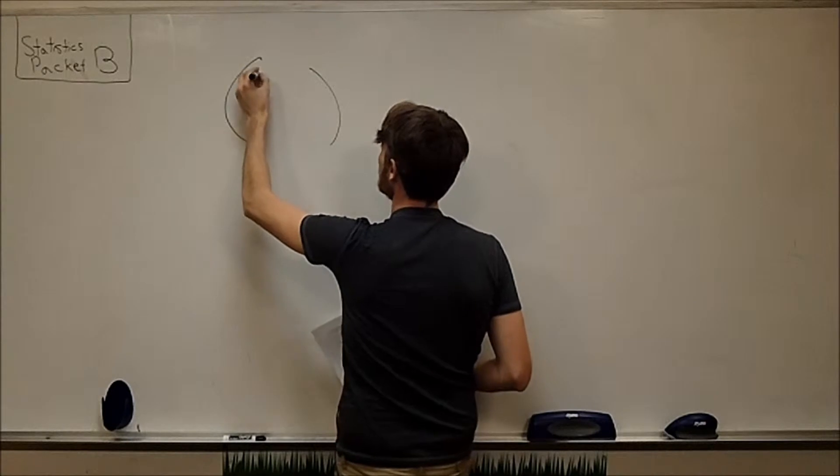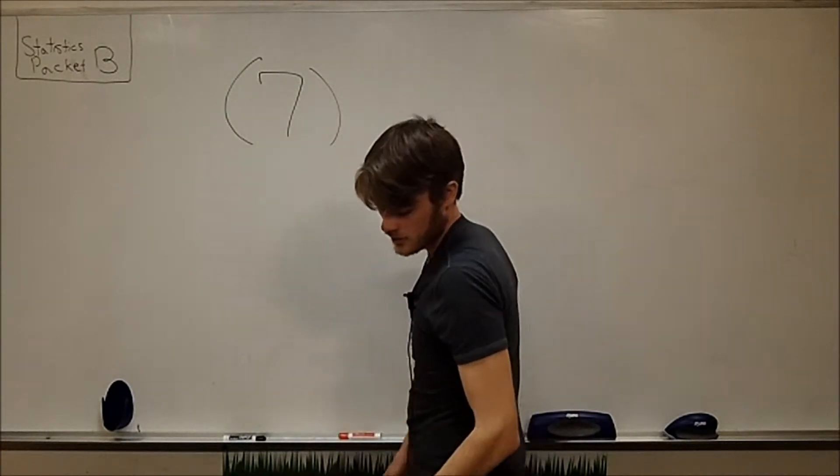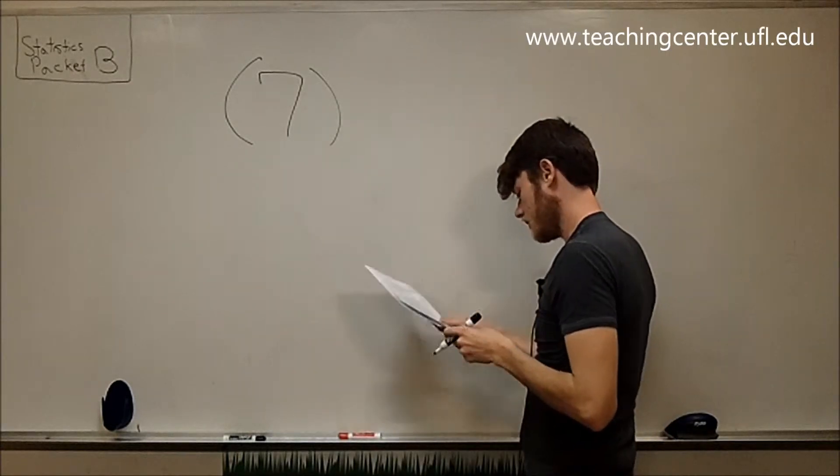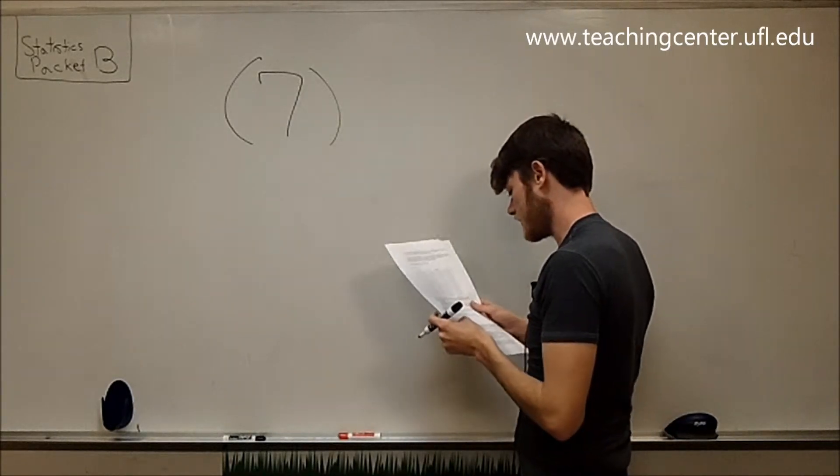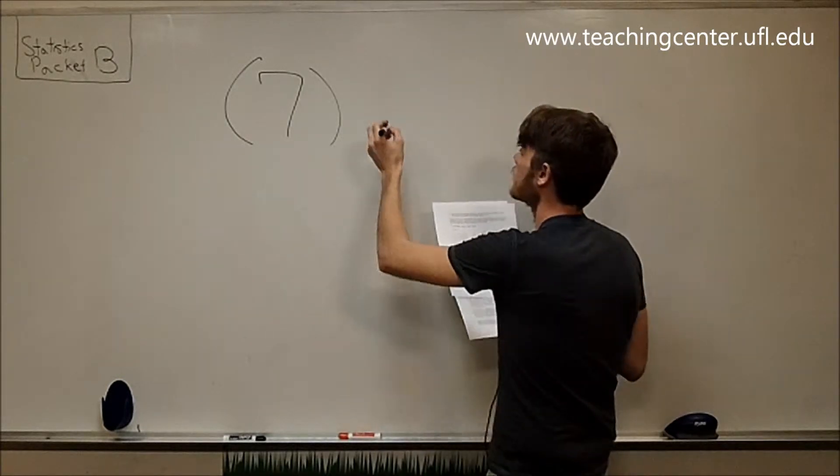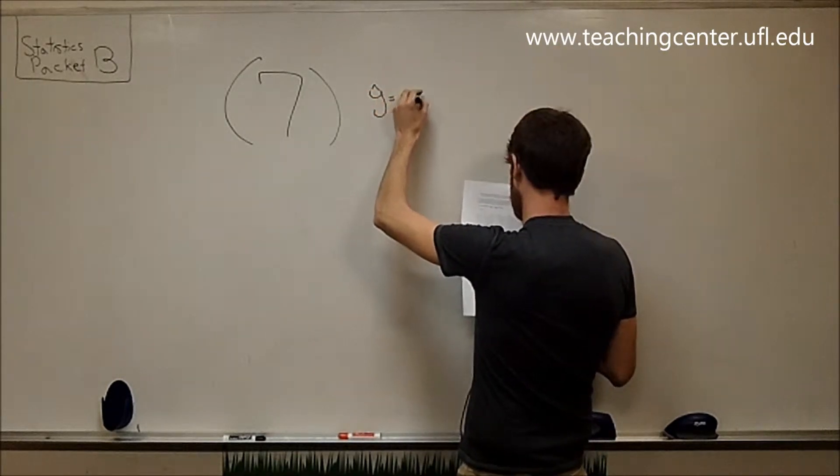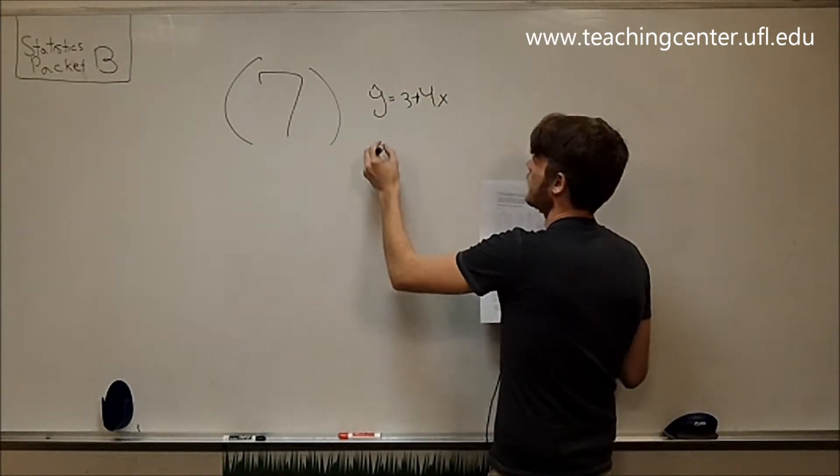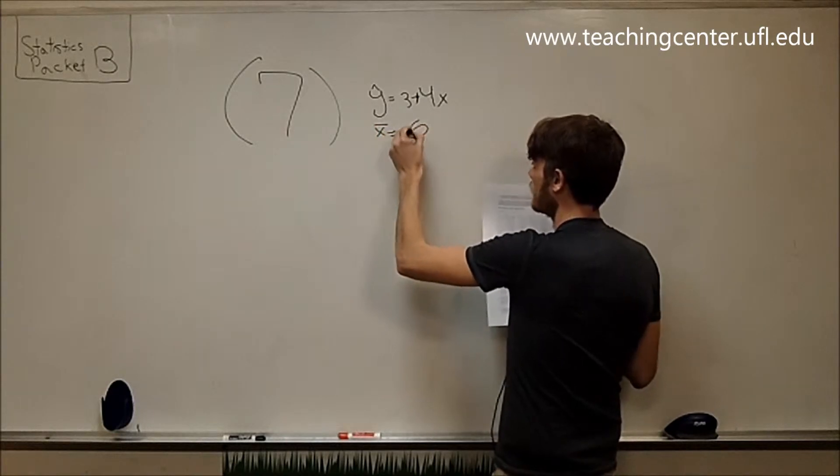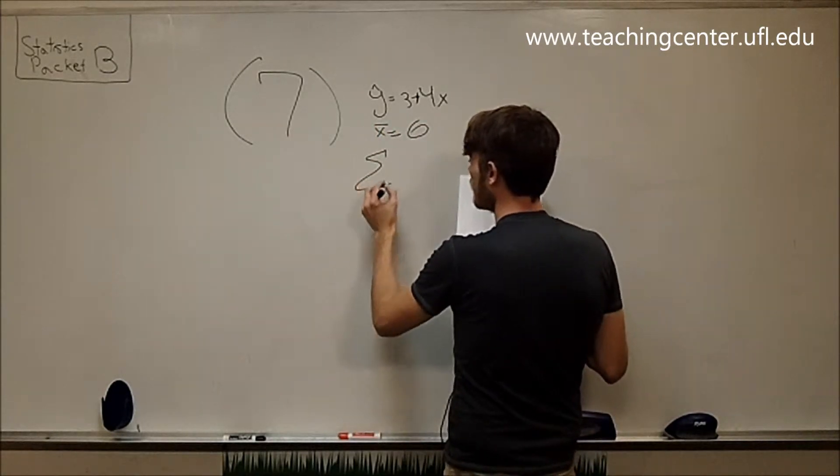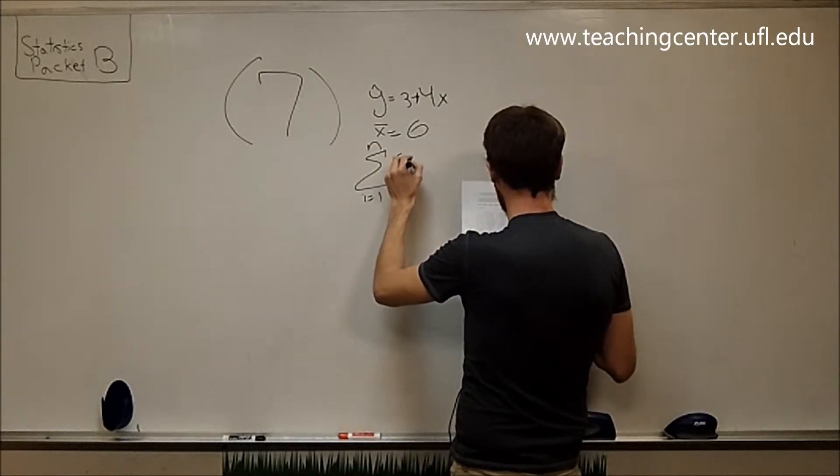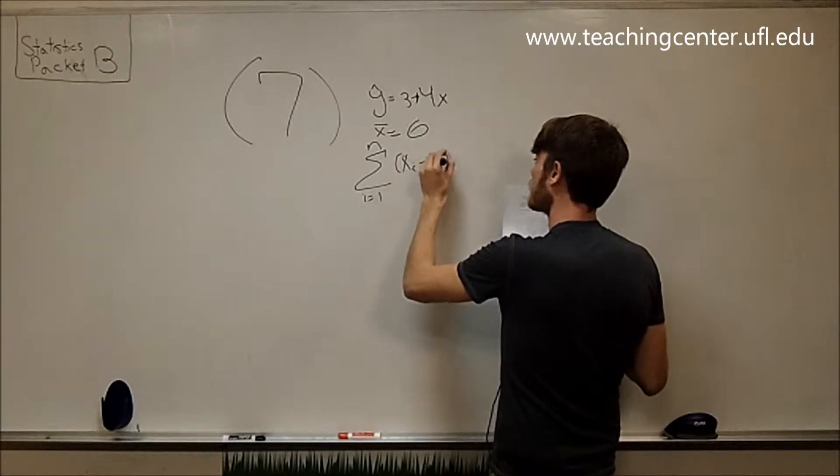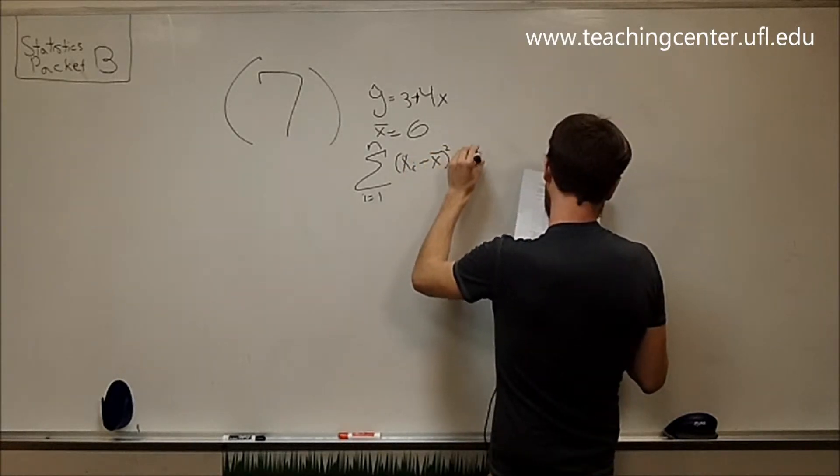On question 7, we have that, let's see. We're trying to create prediction and confidence intervals. We have the information y hat equals 3 plus 4x. We have x bar equals 6. We have this information, xi minus x bar squared, that equals 18.